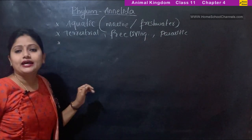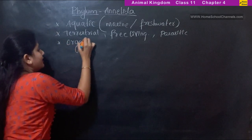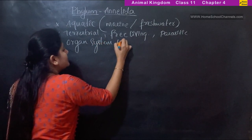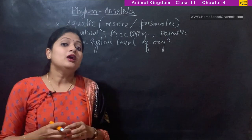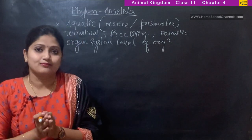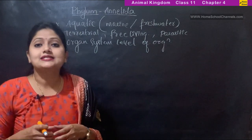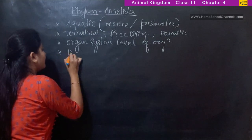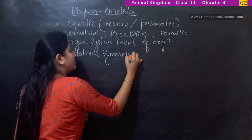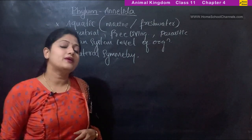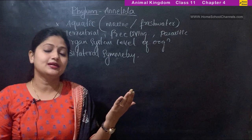Moving on to other characteristics: they exhibit organ system level of organization, where many organs together form one organ system. They also exhibit bilateral symmetry — when you cut an organism through its main axis, it opens into equal right and left halves.